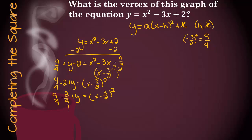9 minus 8 is 1. So we'll have 1 fourth plus y equals x minus 3 halves squared. So we're almost to our equation, but we need to get y by itself. So I need to subtract 1 fourth from both sides.